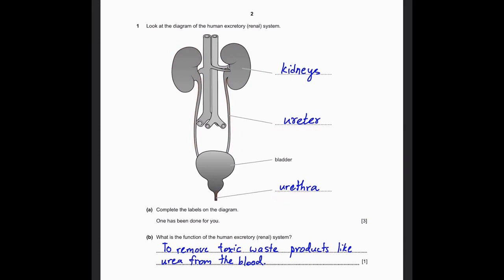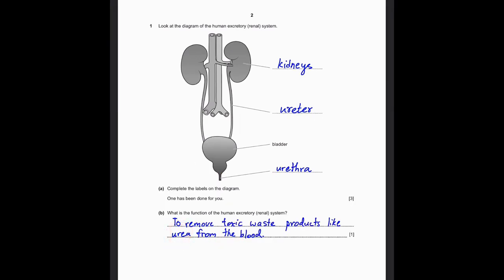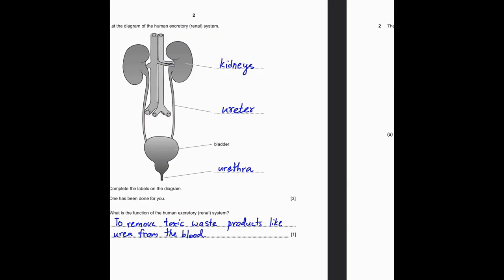What's the function of the human excretory or renal system? It's simply to remove toxic waste products like urea from the blood. Urea is a substance which mixes with water, and when that happens, it forms urine, which we excrete from the body. And that's what the human excretory system actually does.